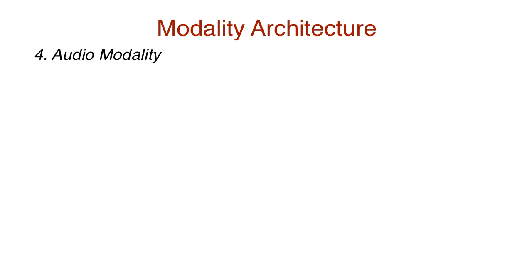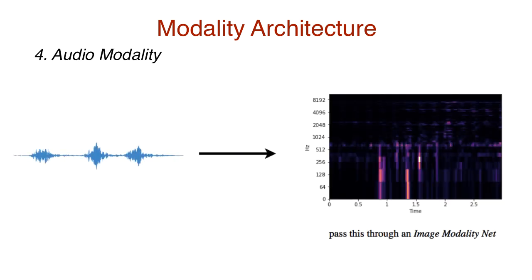Now let's talk about audio modality nets. The one-dimensional raw audio can be converted into a two-dimensional spectrogram. This is basically a 2D plot of time on the x-axis and frequency on the y-axis. The spectrogram can be treated as an image input and passed through the image modality net, like I talked about before.